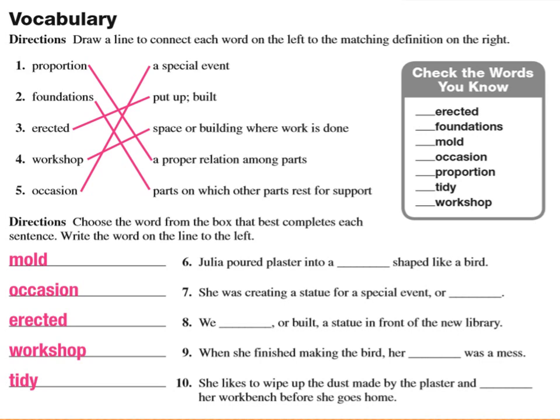Number six: Julia poured plaster into a mold shaped like a bird. Number seven: She was creating a statue for a special event, or occasion. Number eight: We erected, or built, a statue in front of the new library. Number nine: When she finished making the bird, her workshop was a mess. Number ten: She likes to wipe up the dust made by the plaster and tidy her workbench before she goes home.